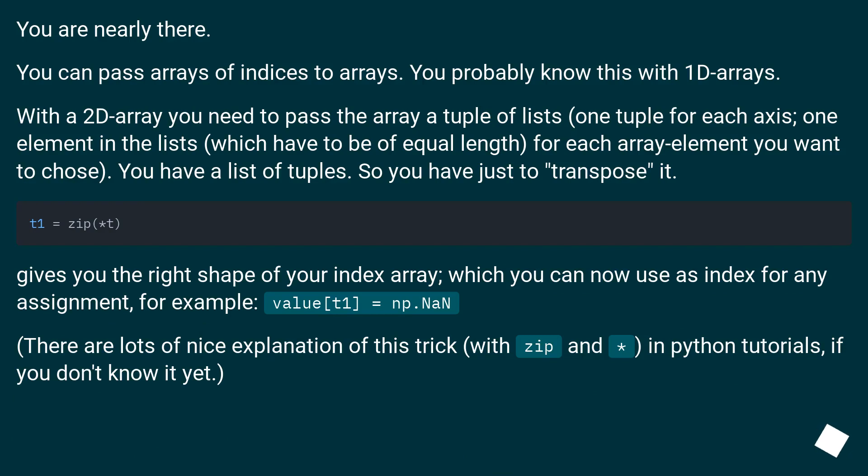You are nearly there. You can pass arrays of indices to arrays. You probably know this with 1d arrays. With a 2d array you need to pass the array a tuple of lists, one tuple for each axis, one element in the lists which have to be of equal length for each array element you want to choose. You have a list of tuples, so you have just to transpose it.